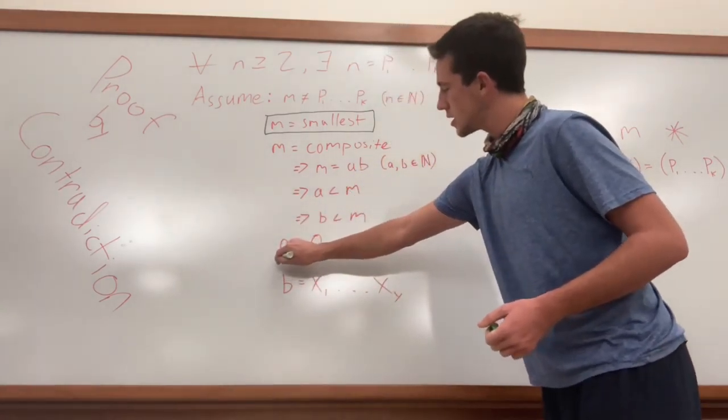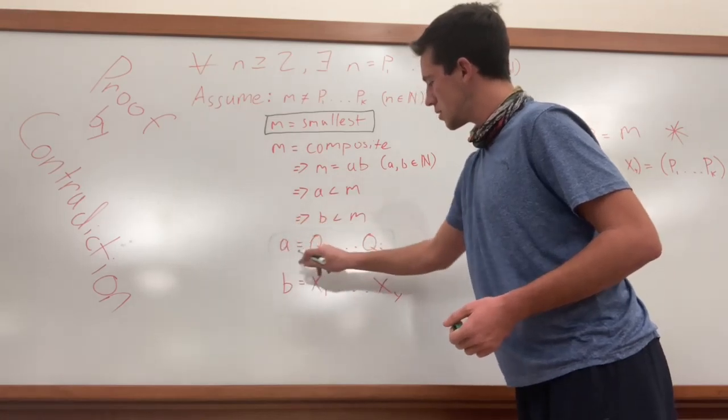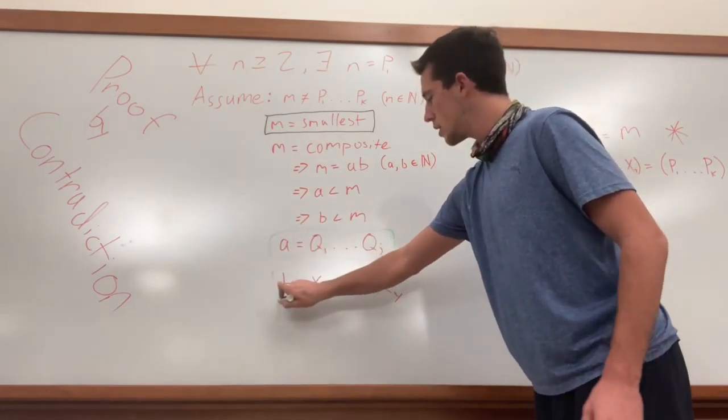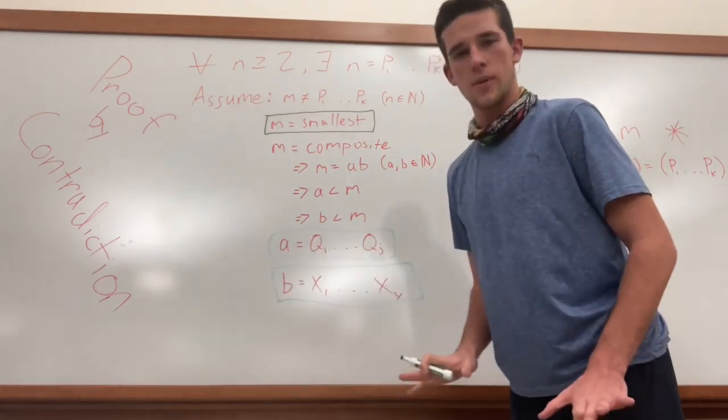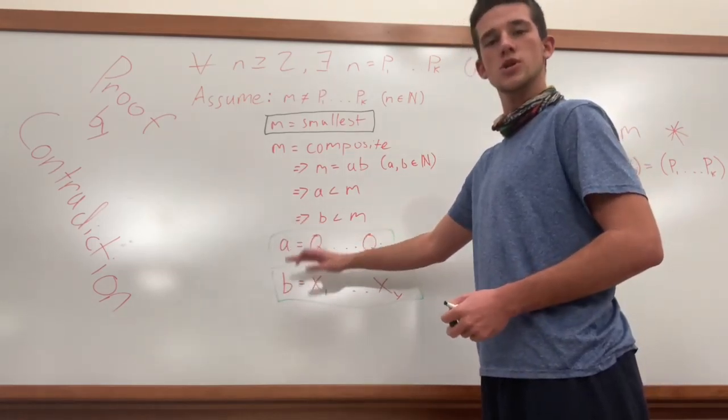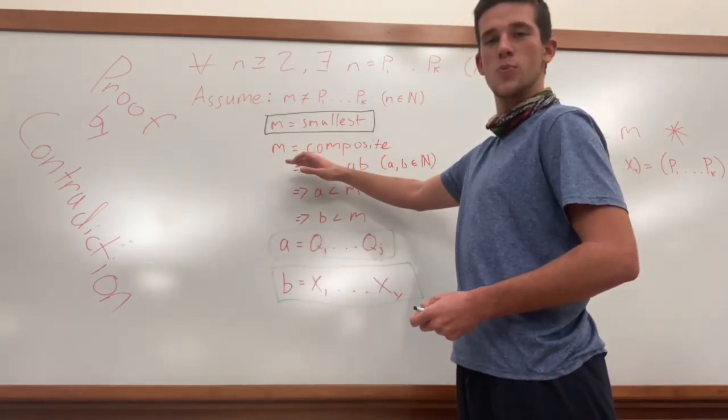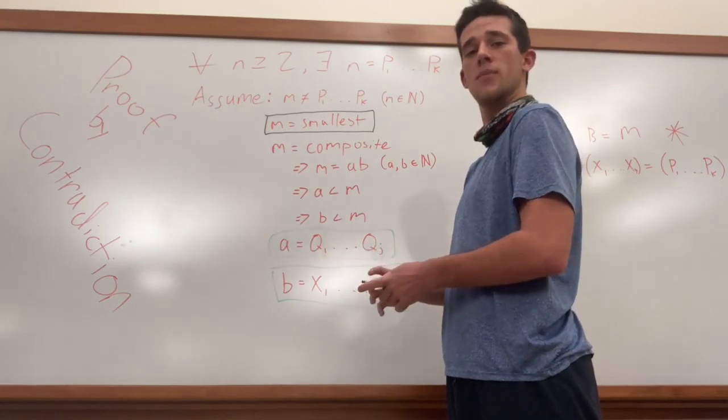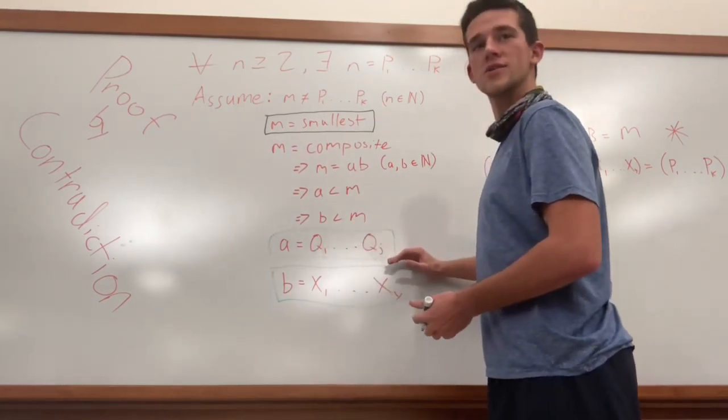So therefore, as you can see here, a equals a product of prime numbers, and b equals a different product of prime numbers, okay? Everyone following? So we have two smaller numbers, and once we take those, because those numbers are smaller than the smallest number in the group that cannot be represented by a product of prime numbers, we know they are products of prime numbers.